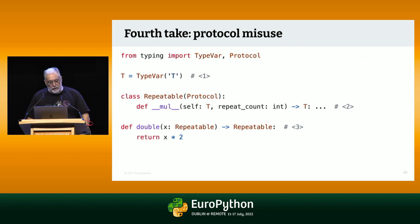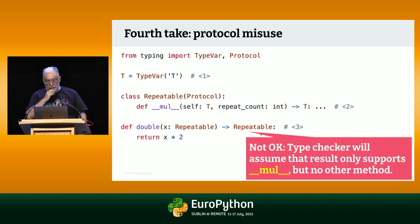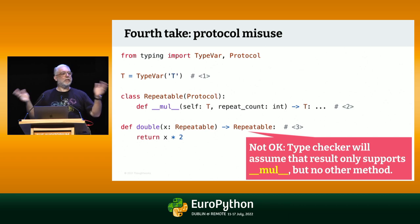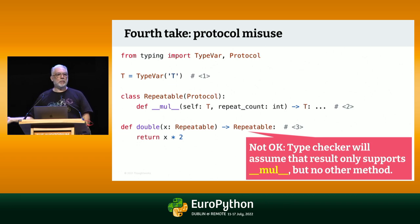The solution is to create a Repeatable protocol. The Repeatable protocol says it's anything that implements __mul__ and takes a repeat count which is an integer. Now I can say that X is a Repeatable and this returns a Repeatable. But we're not done yet — when I call double, the result is inferred to be something that only implements __mul__. If you need to do other kinds of operations with the object, the type checker won't let you. At runtime everything happens because that's the characteristic of Python's gradual type system.